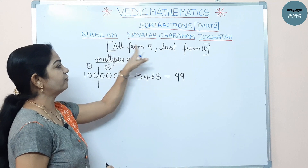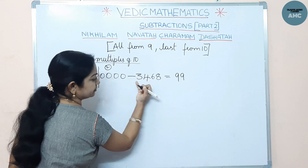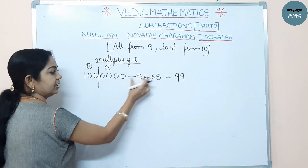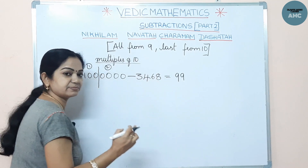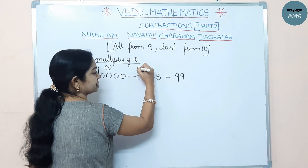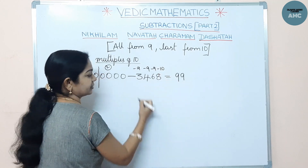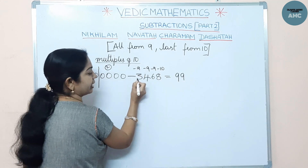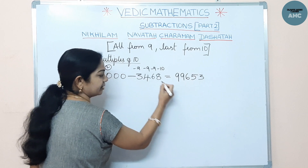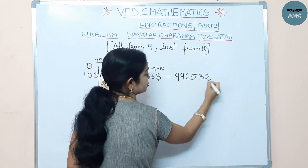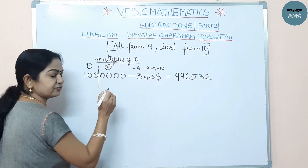For the second part, apply 'All from Nine, Last from Ten.' The second part has four digits: 3, 4, 6, 8. Subtract all digits from 9 except the last, which is subtracted from 10. So: 9-3=6, 9-4=5, 9-6=3, 10-8=2. The final answer is 99 | 6532.